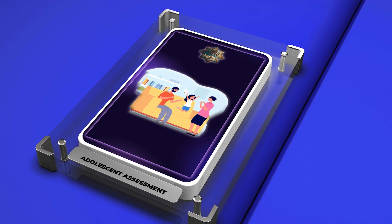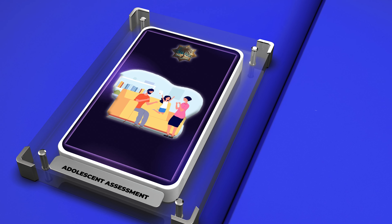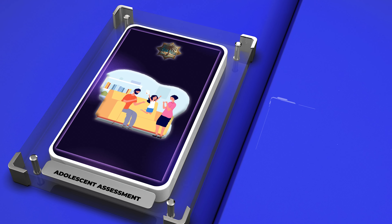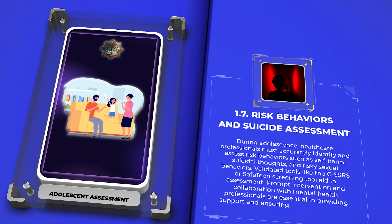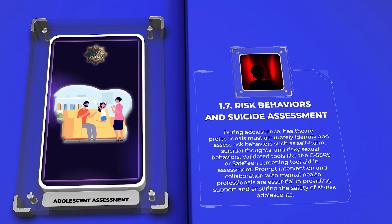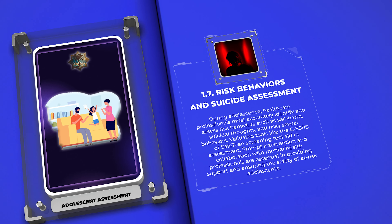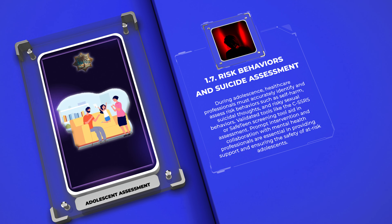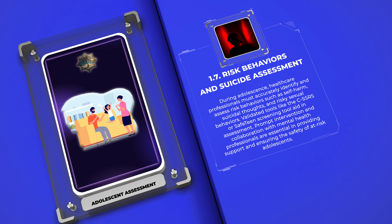During adolescence, healthcare professionals must accurately identify and assess risk behaviors such as self-harm, suicidal thoughts, and risky sexual behaviors. Validated tools like the C-SSRS or Safe Teen Screening Tool aid in assessment. Prompt intervention and collaboration with mental health professionals are essential in providing support and ensuring the safety of at-risk adolescents.